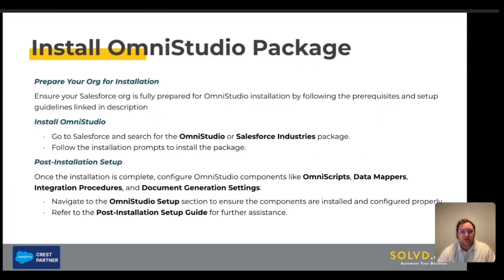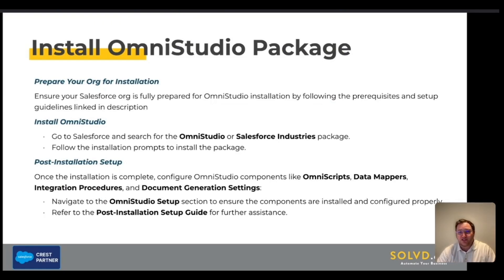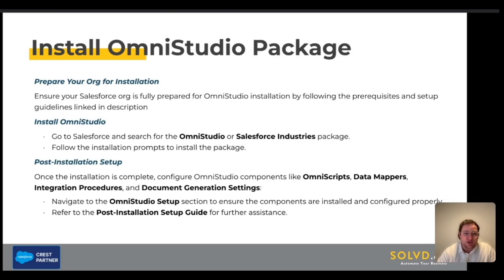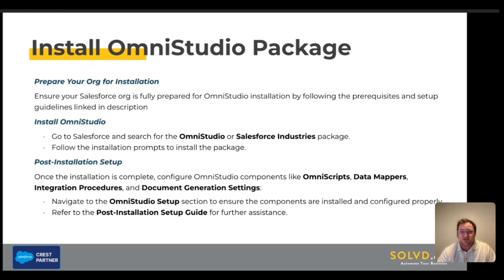First off, we need to prepare your org for installation. Before you begin, ensure your Salesforce org is fully prepared for OmniStudio installation by following the prerequisite and setup guidelines — this will be linked in the description below. Next, you will go ahead and install OmniStudio. You will go to Salesforce and search for the OmniStudio or Salesforce Industries package, then follow the installation prompts to install the package.